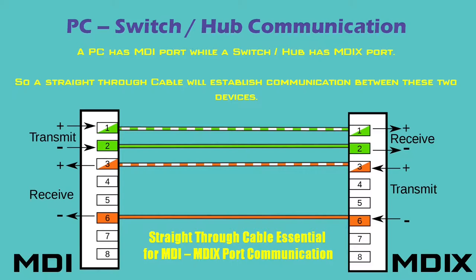Now, if we are planning to connect a PC to a switch or a hub, we can connect these two through a straight-through cable — that is, pin 1 to 1, 2 to 2, and so on up to pin 8 to 8. A PC has an MDI port normally, while a switch or hub normally has an MDIX port. Since the MDI port has transmit pins at 1 and 2 while the MDIX port has receive pins at 1 and 2, a straight-through cable will establish the communication.